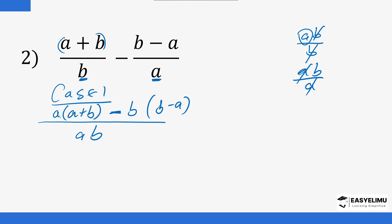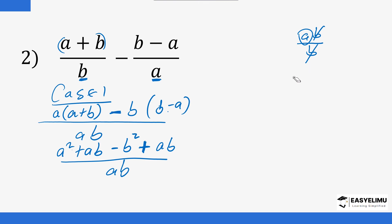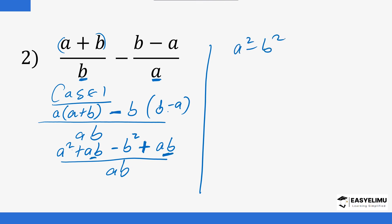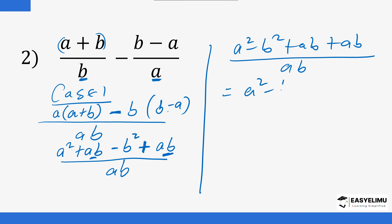Opening the brackets: the letter outside multiplies all terms inside. So we get a² + ab. Then, because there is a minus sign before the second bracket, the signs inside change: b × b = b² becomes −b², and b × a becomes +ab. Everything is divided by ab. Collecting like terms — we have ab and ab, both positive — giving us a² − b² + 2ab, all divided by ab. That is the simplest form.